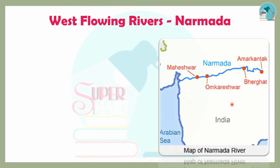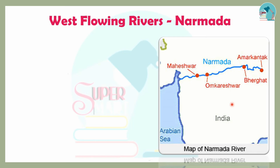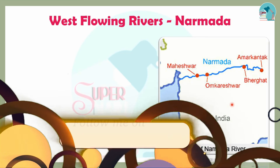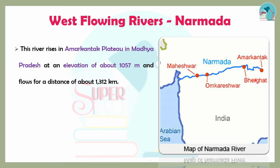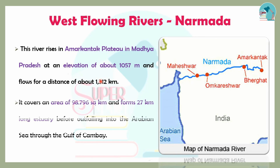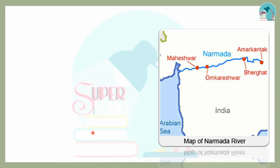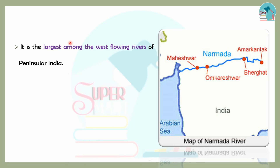Next is the Narmada, which is a West flowing river. The East flowing rivers drain into the Bay of Bengal, while West flowing rivers drain into the Arabian Sea. The Narmada has an elevation of 1,057 meters and a length of 1,312 km, with a basin area of 98,796 square kilometers. It flows through a 27 km long estuary and drains into the Gulf of Khambhat.